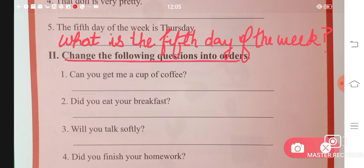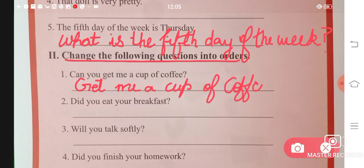Can you change the following into orders? Now you have to change them into orders. 'Can you get me a cup of tea?' Remove 'can you' and directly write 'Get me a cup of tea.' This becomes your command. You're ordering someone to bring you coffee.